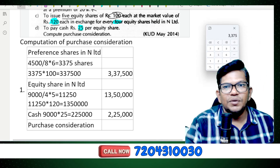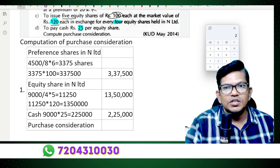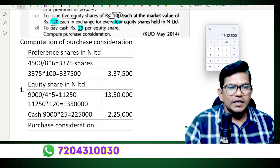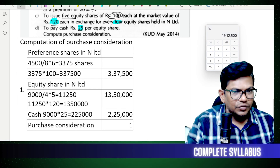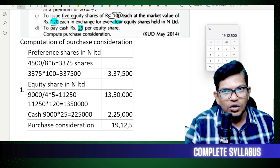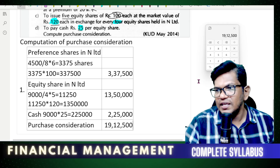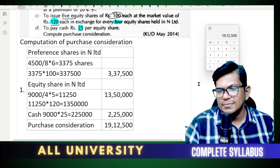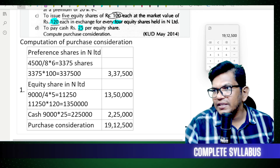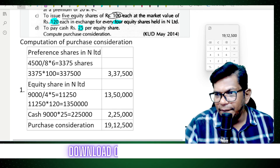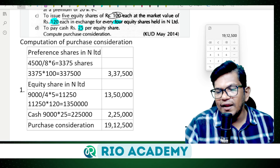Total purchase consideration: 3,37,500 plus 13,50,000 plus 2,25,000 equals 19,12,500. Question understood — purchase consideration calculated correctly.